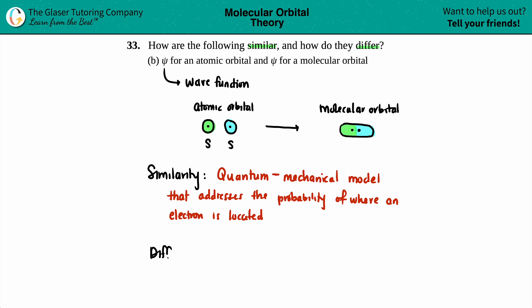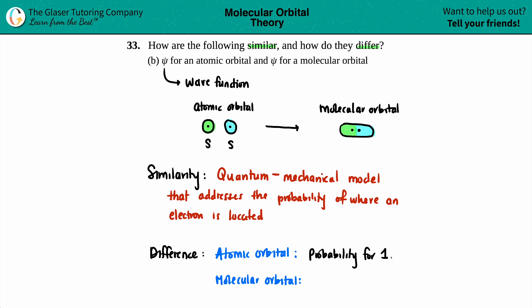Now we just have to talk about the difference. The difference is describing your atomic orbital versus your molecular orbital. When talking about probability for an atomic orbital versus a molecular orbital, the difference is talking about how many electrons. In your atomic orbitals, each atomic orbital only has one electron, so you're describing the probability for one electron. As opposed to a molecular orbital — when those two atomic orbitals come together, you're describing the probability for the two electrons located in that molecular orbital. And that would be the difference.